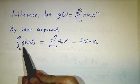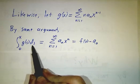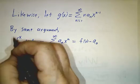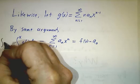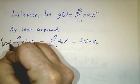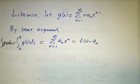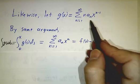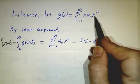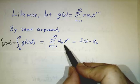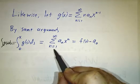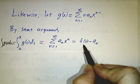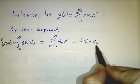And we get that the integral of g(s) ds from 0 to x, in other words, the indefinite integral of g(x) dx is given by, well, the integral of nx to the n-1 is x to the n. And this is what we have. And that's exactly the formula for f(x) except for the leading constant.